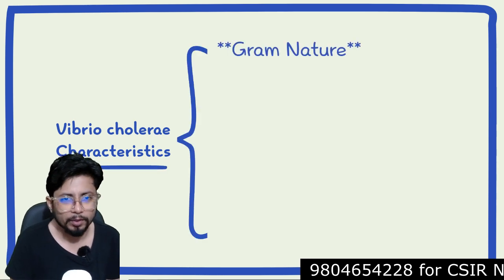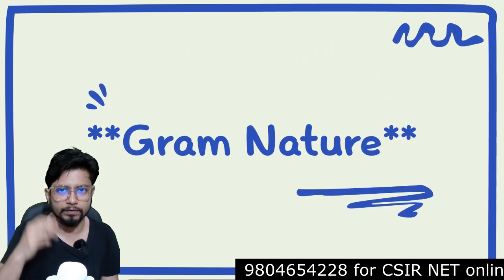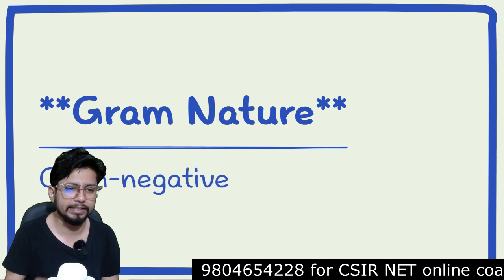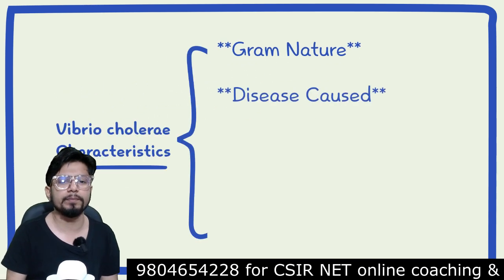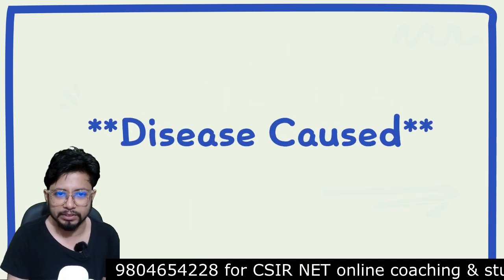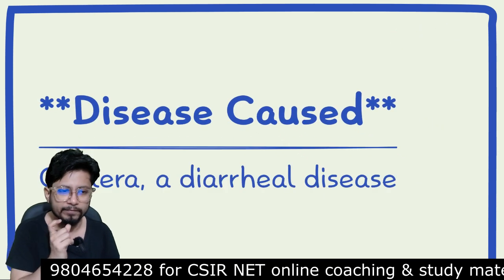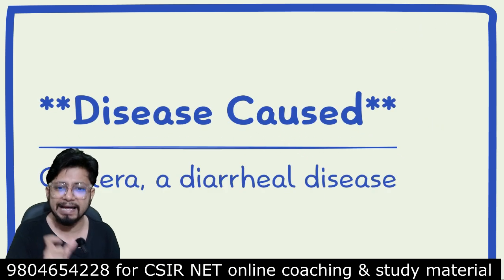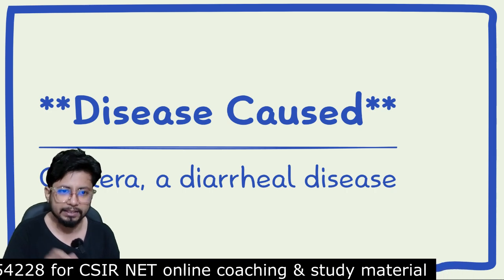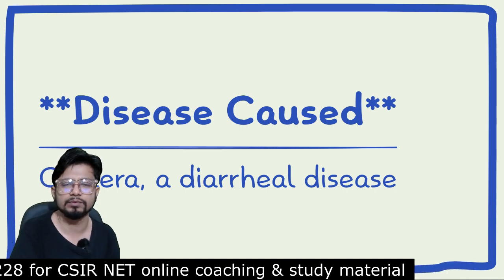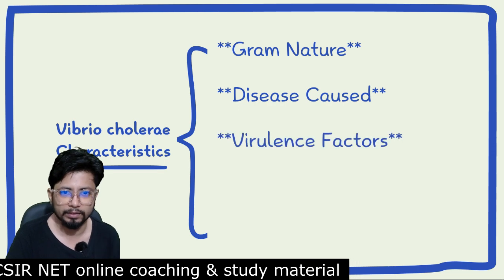The first important parameter we are going to discuss is the gram nature of Vibrio cholerae, and Vibrio cholerae is gram negative in nature. The next important parameter is the disease caused. The disease caused by Vibrio cholerae is cholera, a diarrheal disease that causes watery diarrhoea and ultimately leads to dehydration and even death of the individual.